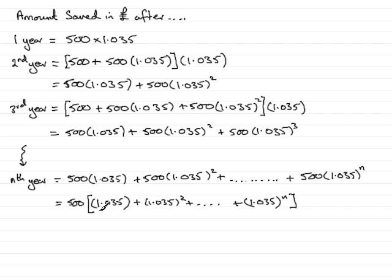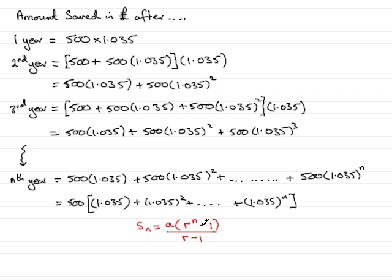Inside this square bracket, what we've got is a geometric series — a geometric series because on each term we keep multiplying by a common value called the common ratio, which in this case is 1.035. We should know the sum of the first n terms of a geometric progression. It's given by: a times (r to the power n minus 1), all divided by (r minus 1), where a is the first term.